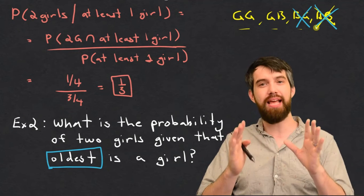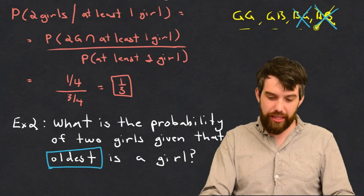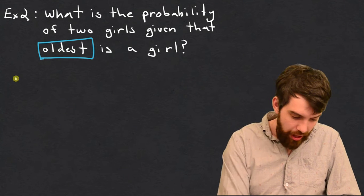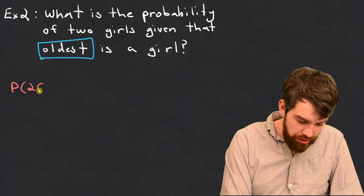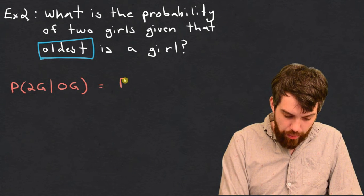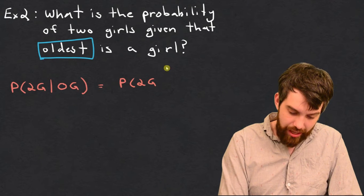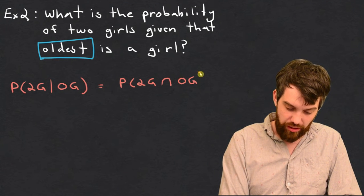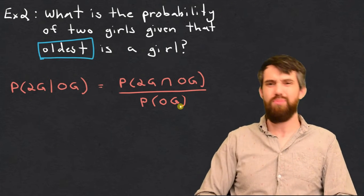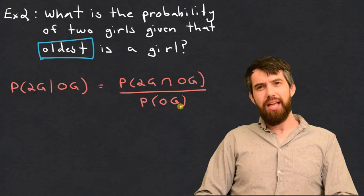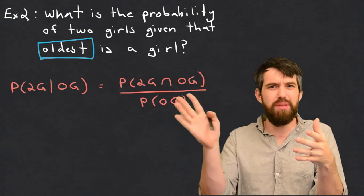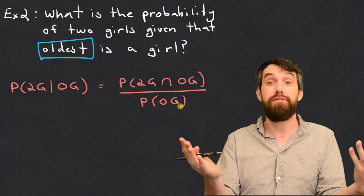Let's verify this quickly using conditional probability formalism. The probability of two girls given the oldest is a girl — I'll abbreviate it as OG — equals the probability of two girls and the oldest being a girl, divided by the probability that the oldest is a girl. The same analysis applies on top: if you have two girls, it must be the case that the oldest is a girl. So the intersection is just the probability of two girls, which is one-quarter.